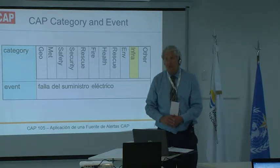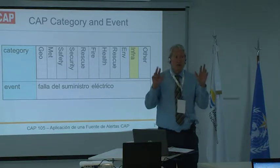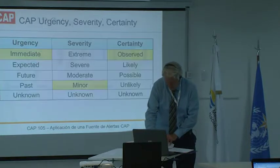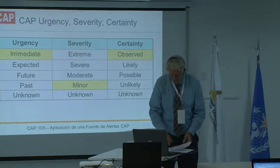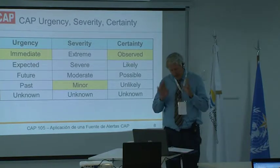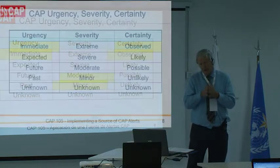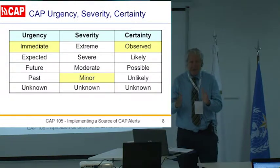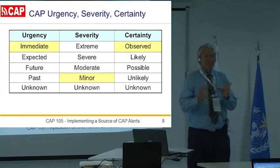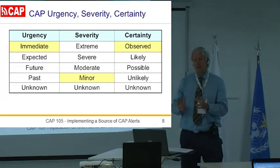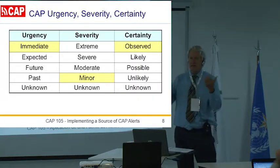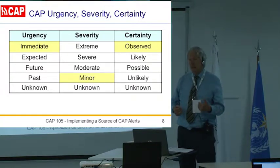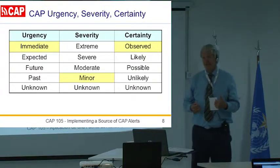For the event, we simply put the words 'power failure' — that's just a text description. Then urgency, severity, and certainty: the three aspects of the hazard situation that we need to rank how much we really need your attention. The attention dimension has three aspects.